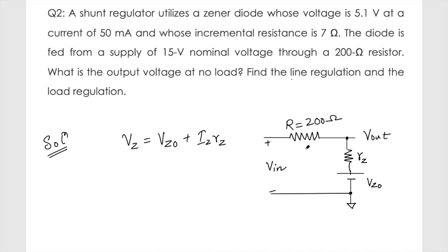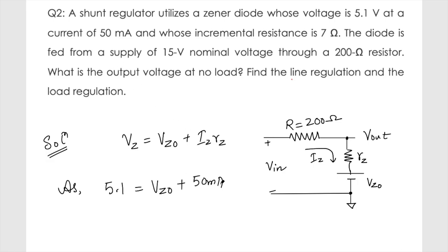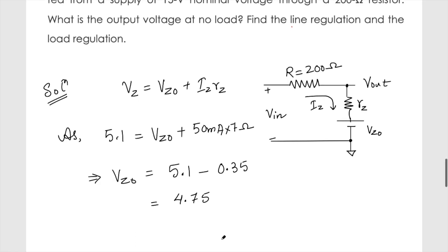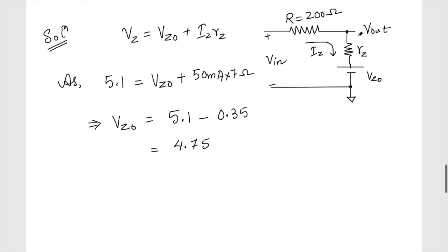From vz equals vz0 plus iz times rz: 5.1 equals vz0 plus 50 milliampere times 7 ohms, which gives 5.1 equals vz0 plus 0.35. Therefore vz0 equals 4.75 volts.